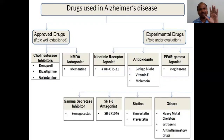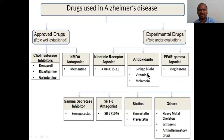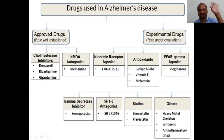You are lucky — the drugs are very few. The approved drugs are the important ones. These experimental drugs — such as zinc, Ginkgo biloba (a herbal drug), vitamin E, and melatonin — are not much important for regular or competitive examinations. The main drugs are four, very simple. Three of them share the same mechanism of action, and Memantine is an NMDA antagonist. So there are only two mechanisms of action.